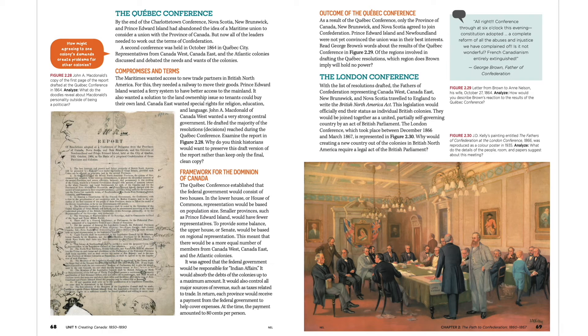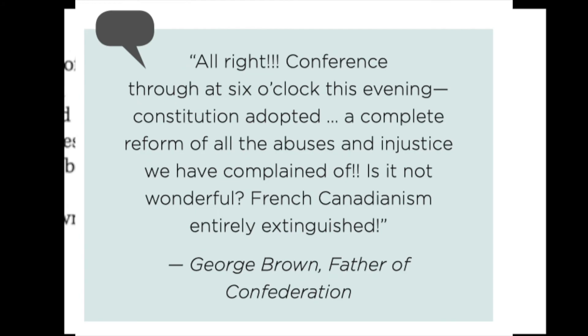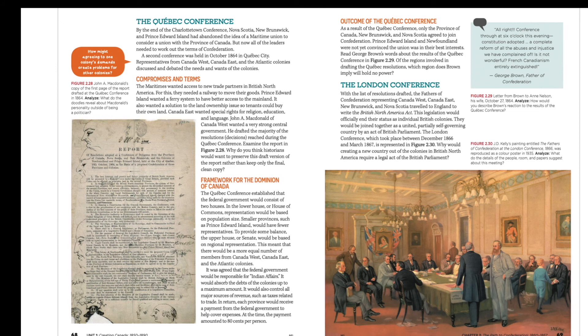Brown wrote: 'Conference through at six o'clock this evening — constitution adopted — a complete reform of all abuses and injustice we have complained of — is it not wonderful — French Canadianism entirely extinguished.' The region he implies will hold no power is Quebec. He believed they had gotten rid of the French Canadian element, because he wanted the French to be assimilated and wanted to eliminate French culture.